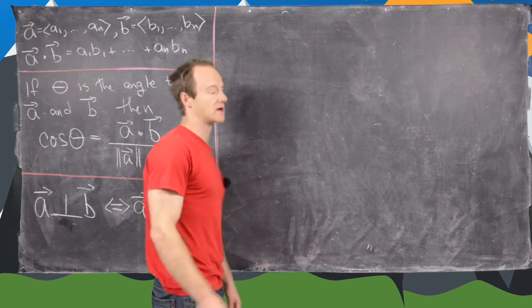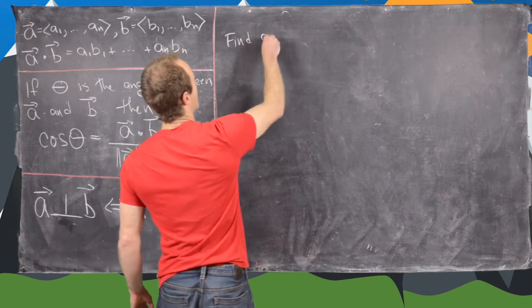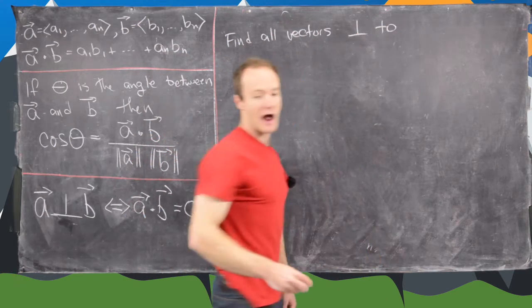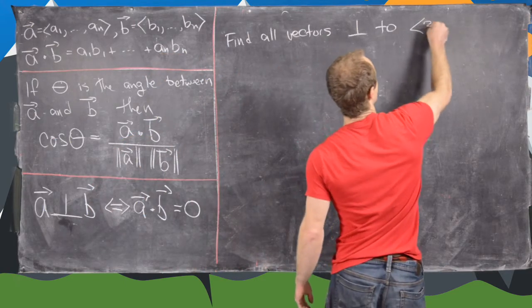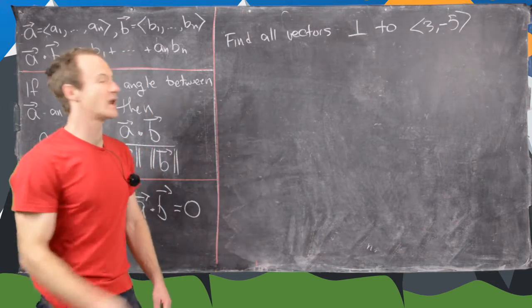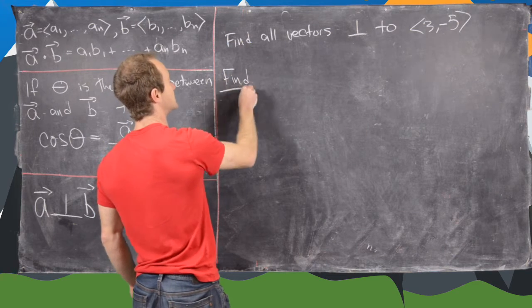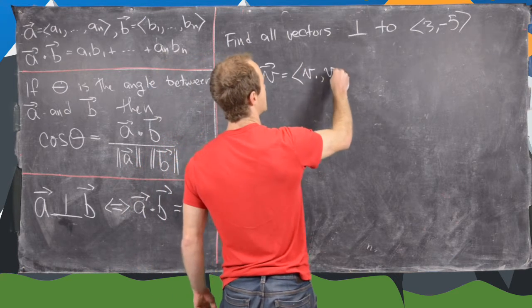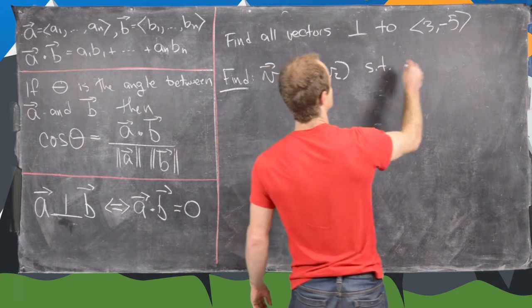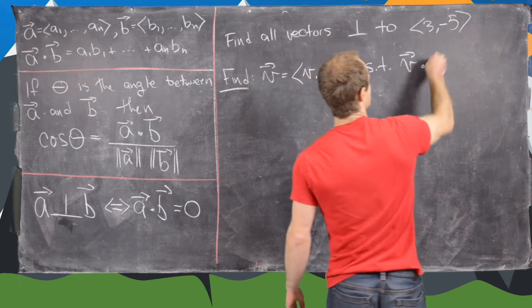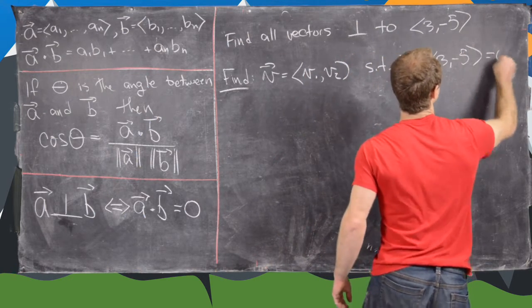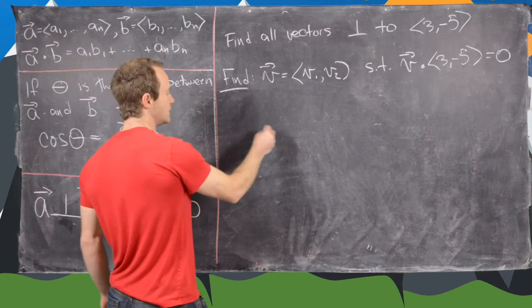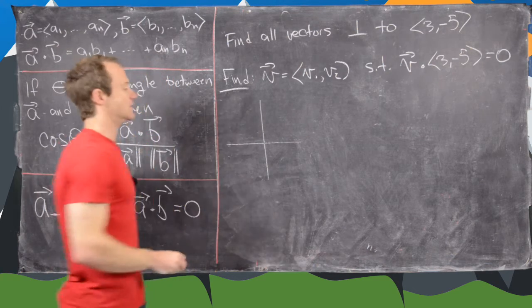So we want to look at four examples here. And the first one is the following: let's find all vectors perpendicular to our given vector 3, -5. In other words, we want to find vectors v with components v1 and v2, such that v dot 3, -5 equals 0. Because remember, the dot product classifies orthogonal vectors. Before we do that algebraically, let's just think about that geometrically.